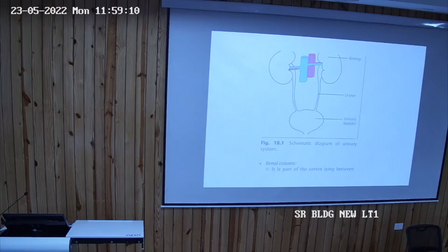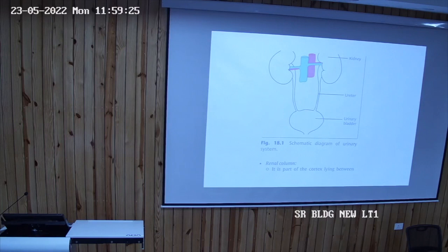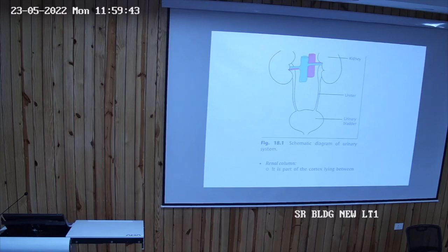Today we will talk about the urinary system. Before coming to the histology part, the urinary system is consisting of a pair of kidneys, a pair of ureters, urinary bladder and urethra. All these structures are the parts of the urinary system.